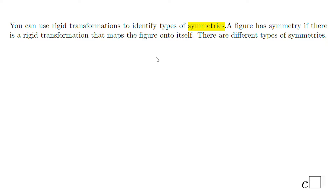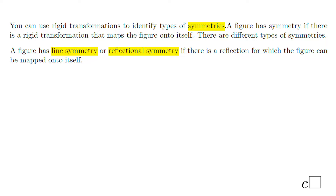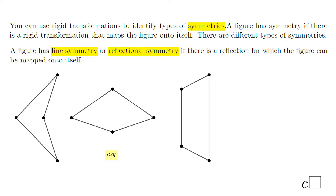Welcome or welcome back to C-square. In this lesson we're going to talk about symmetries. There are different types of symmetry and the first one I'm going to talk about is what we call reflectional symmetry, or line symmetry, because you can use a reflection to map the figure onto itself. You can draw a line, and if you reflect the top part of the figure over this line you get the bottom one, and vice versa.